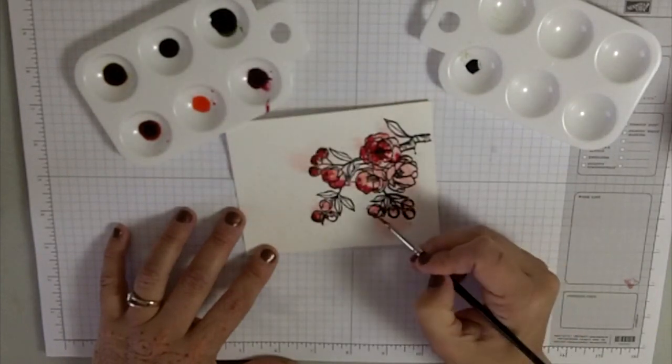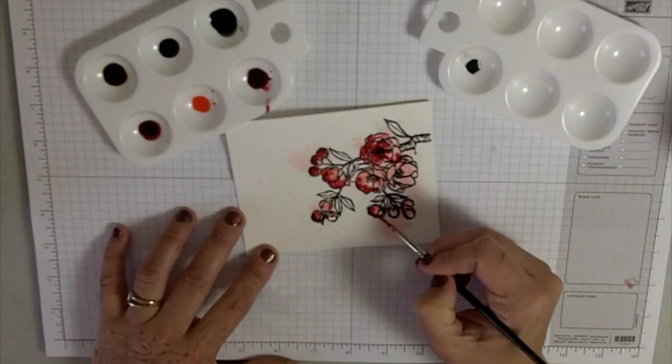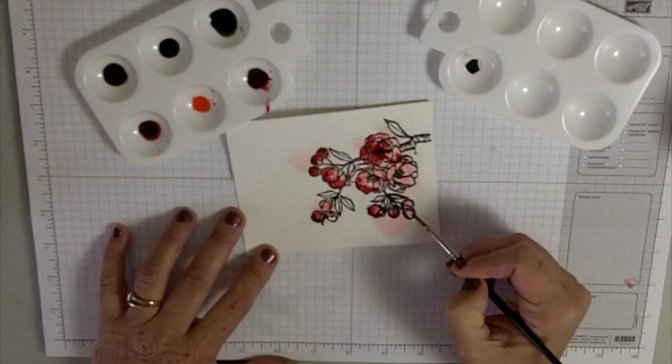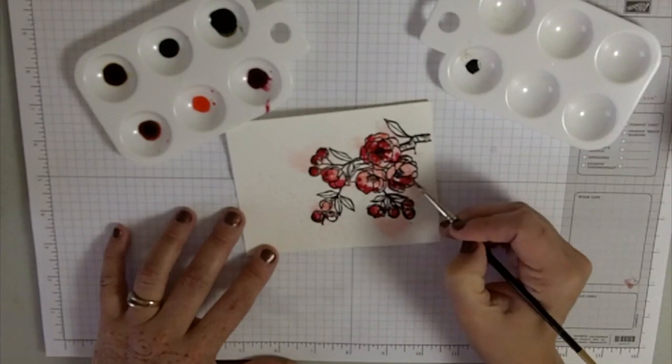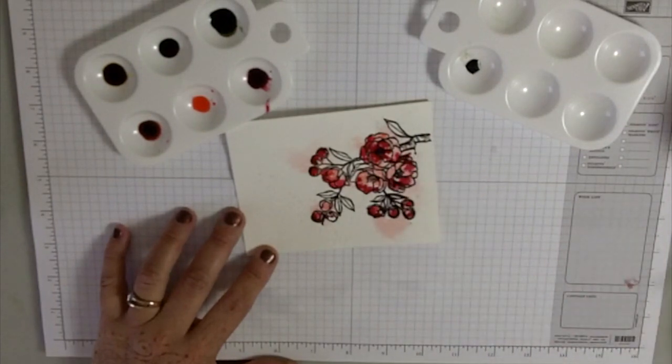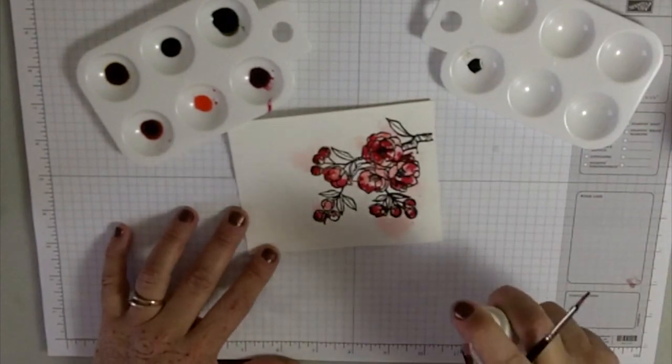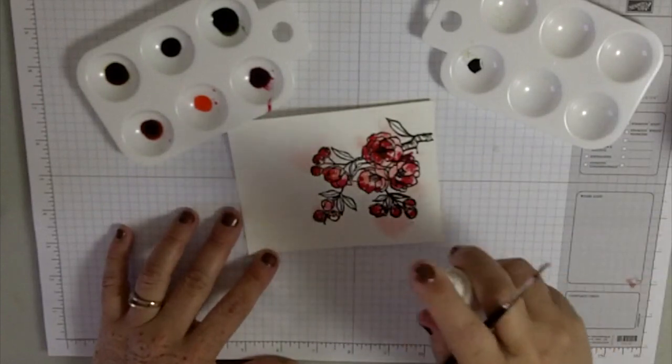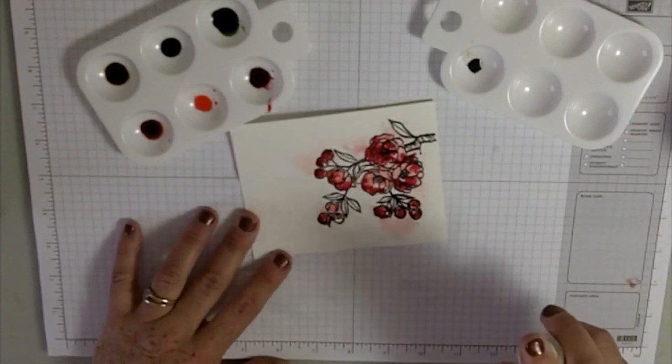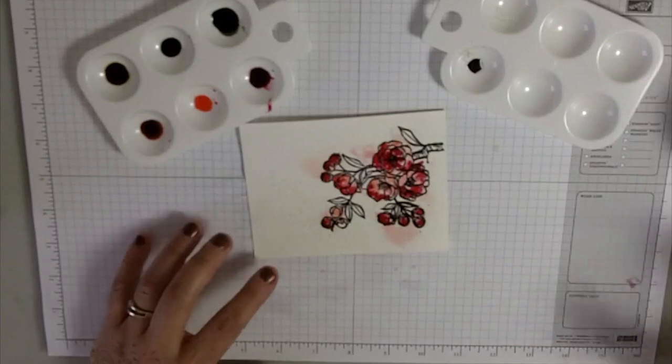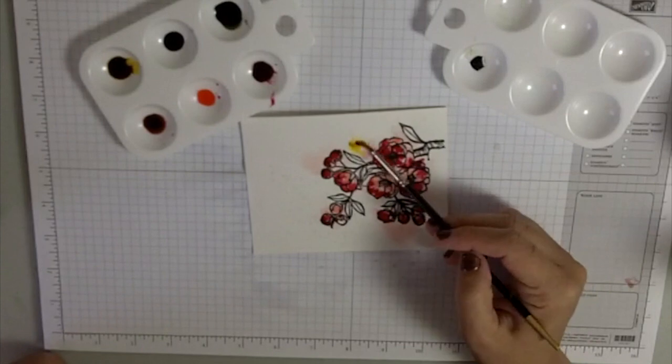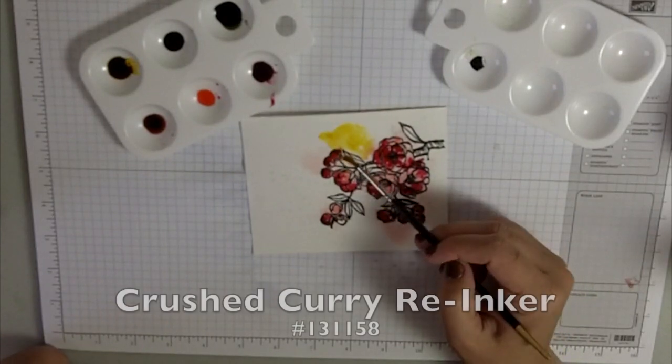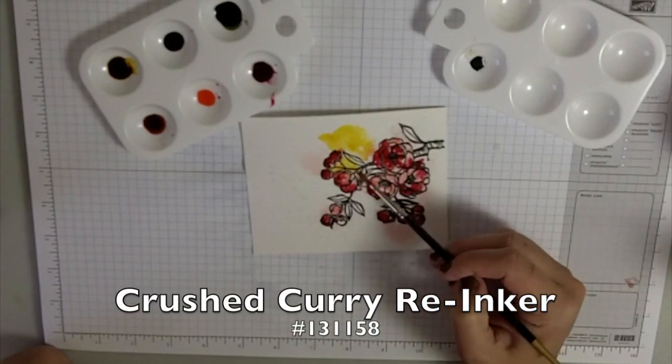It looks pretty, doesn't it? Here's that resist technique I was talking about. I had embossed the Gorgeous Grunge in clear on it, so now I'm getting that resist technique, which is pretty cool. I love that effect, but I want a little bit more watercolor. I'm going to pop some water on there and then start mixing some stuff.